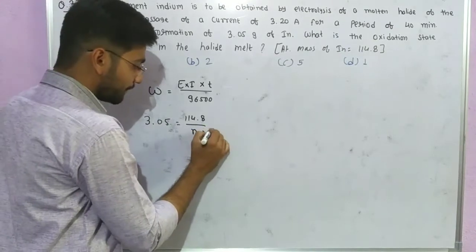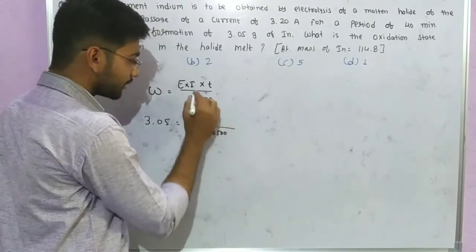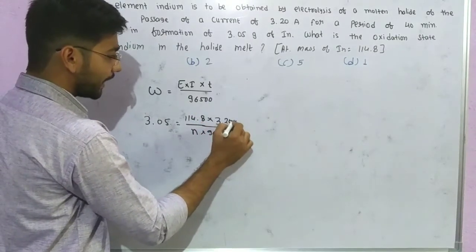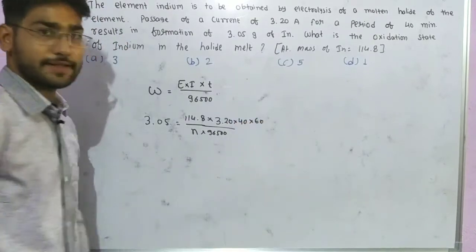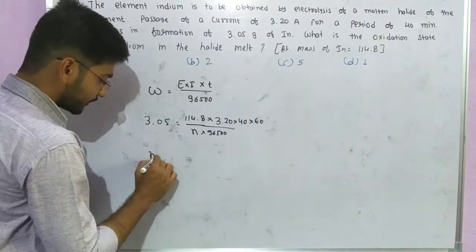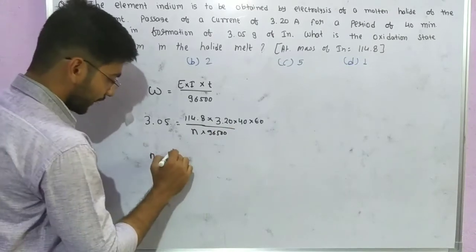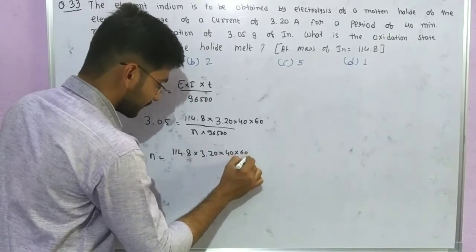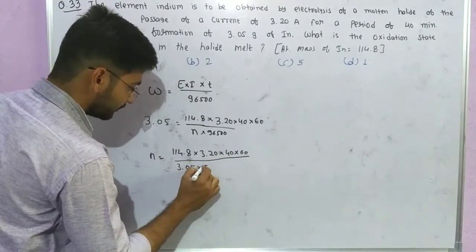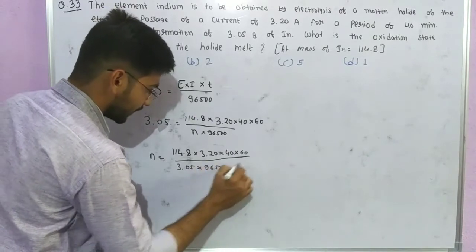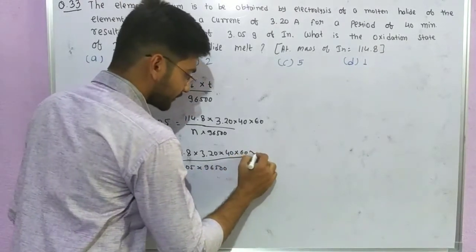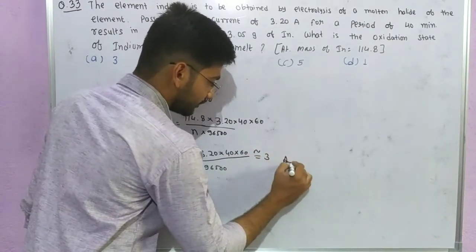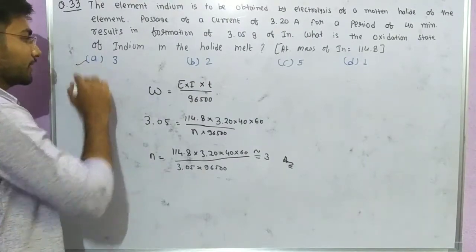Calculating the equivalent mass of indium: 3.05 equals equivalent mass into 3.20 ampere into 40 minutes into 60 seconds divided by 96,500. Rearranging: equivalent mass equals 114.8 into 3.20 into 40 into 60 upon 3.05 into 96,500. Solving this gives the oxidation state as 3. So the answer is 3 — check the correct option.